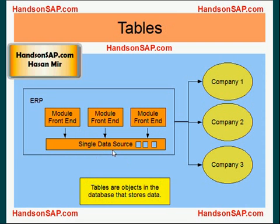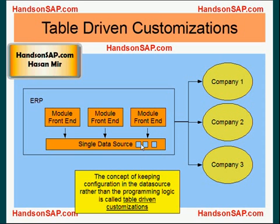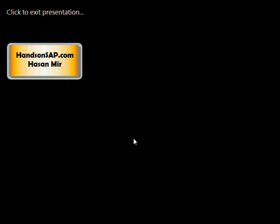Tables are objects in the database that store data. In the database, you will see tons of tables, and each table contains data specific to a particular entity. The concept of keeping configuration in the data source rather than in the programming logic is called table-driven customizations — that's where the term comes from. Most ERP packages, like SAP and Oracle, follow table-driven customizations. The customizations are stored in the tables, not in the programming logic. That's pretty much it for this tutorial, and I'll see you in my next tutorial.